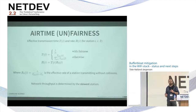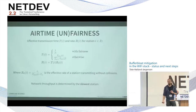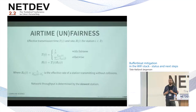So if you have one device at the other end of the room with bad connectivity, that's going to slow down your whole network because it's taking up all the airtime trying to get a few packets through at 11 megabits per second.